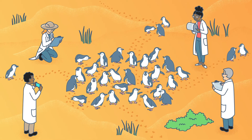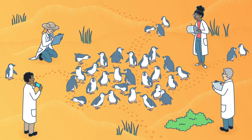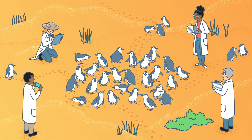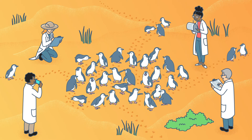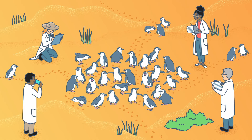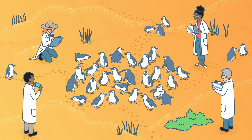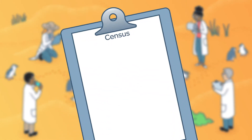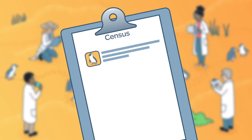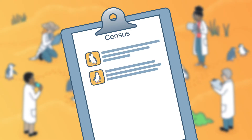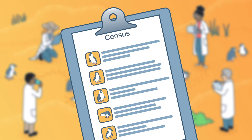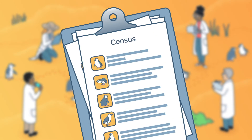Zoologists, scientists who study animals, are studying the population to track numbers and breeding habits. If the scientists conducted a census, they would need to observe every penguin in the colony. It would be too difficult and time-consuming to record data for 30,000 penguins.